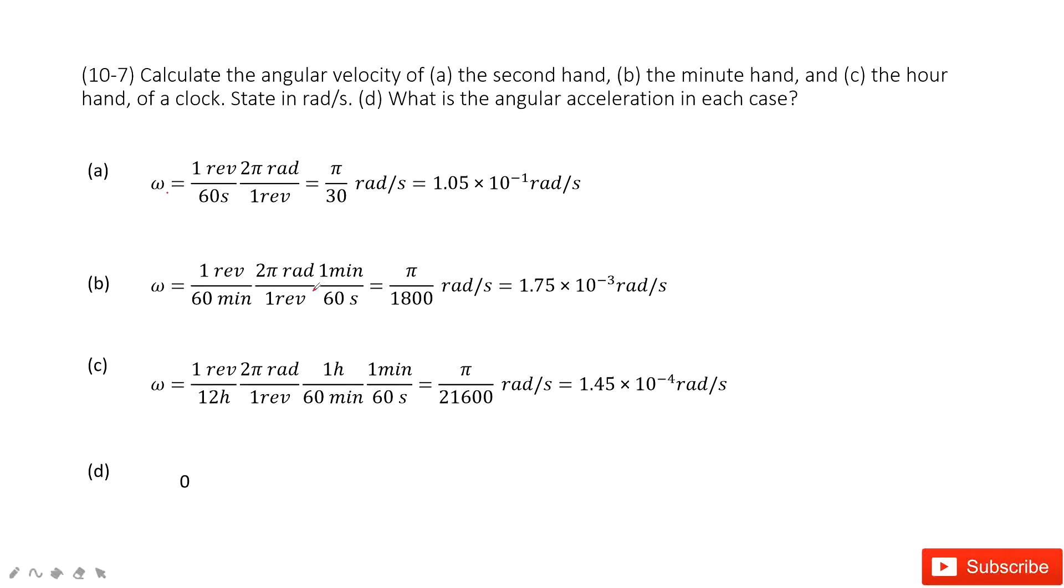Similarly, we can find the minute hand. For the minute hand, one revolution is 60 minutes, and then one revolution is 2π radians. One minute is 60 seconds, and that gives us the final answer.